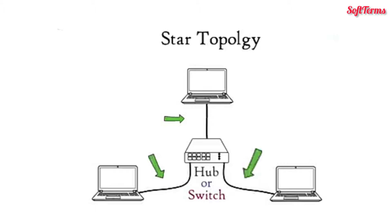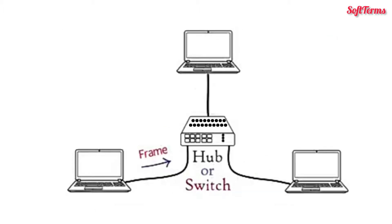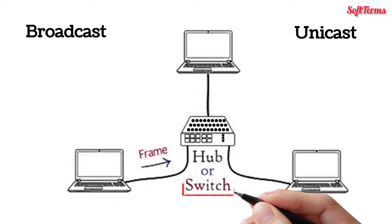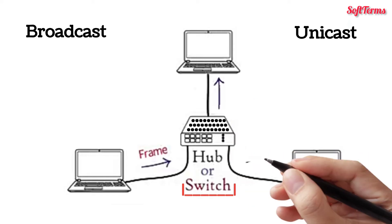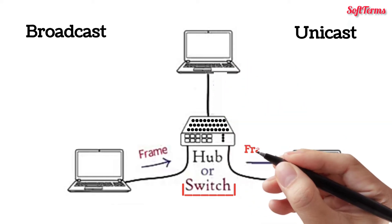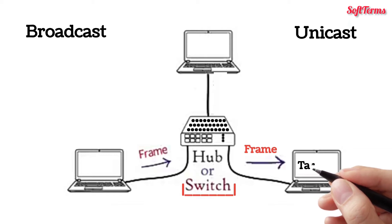In this topology, if one computer wants to send a data frame to another computer, it is first routed to the central device. The central device then either broadcasts or unicasts the received data frame towards the destination computer, based on the type of central device used. Broadcast means transmission of data to all connected devices, while unicast means transmission of data to the target device only.